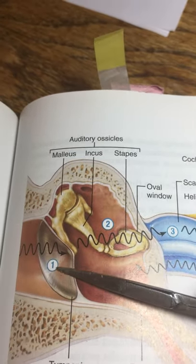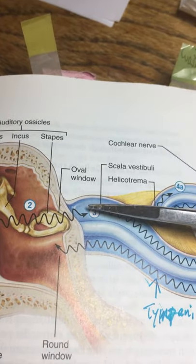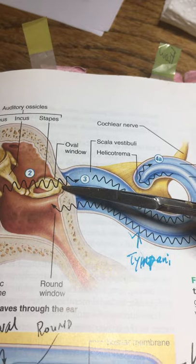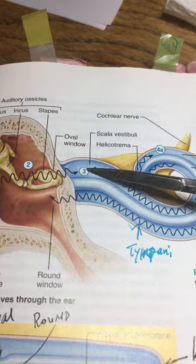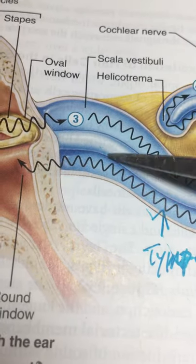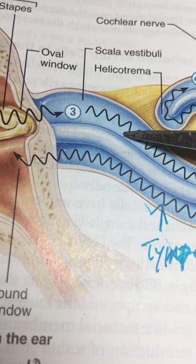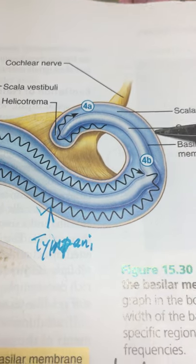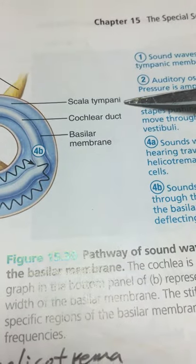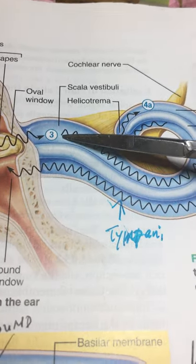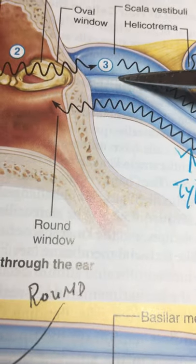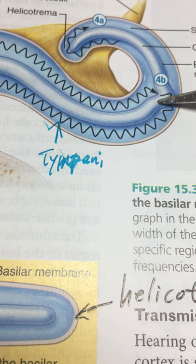Looking at this page, we can see the endolymph is hooked up to the oval window. They've unrolled the cochlea so you can see that the stapes is hooked up to the oval window, which connects to the upper division — the scala vestibuli. It comes all the way out and hooks up at the helicotrema with the scala tympani. So the scala vestibuli and scala tympani are interconnected and share the same perilymph fluid. In between is the potassium-rich scala media.